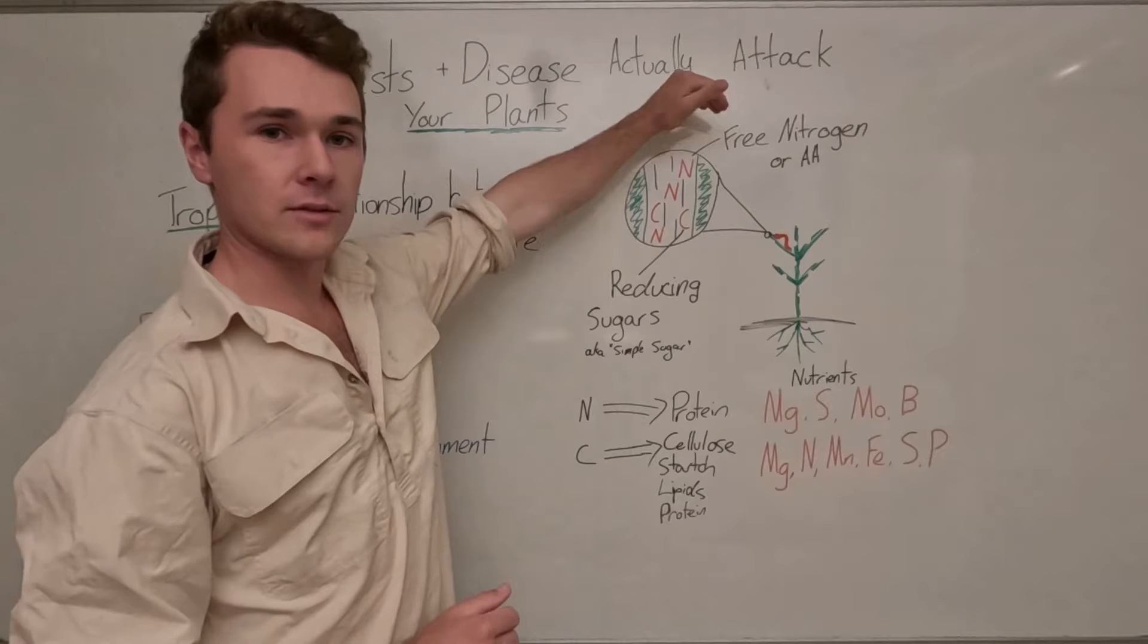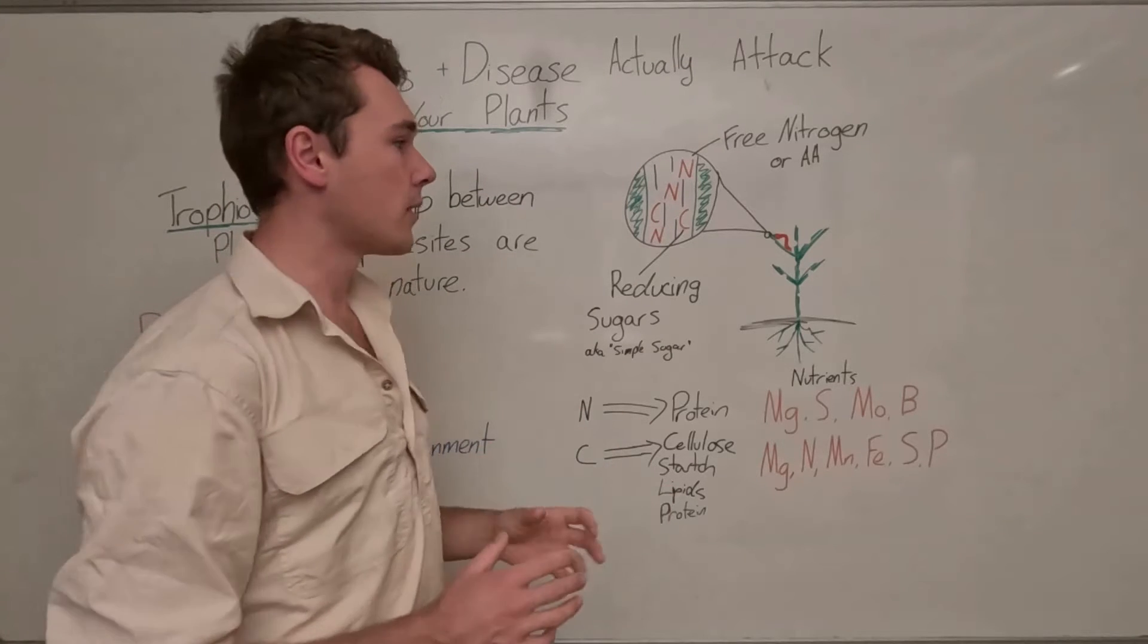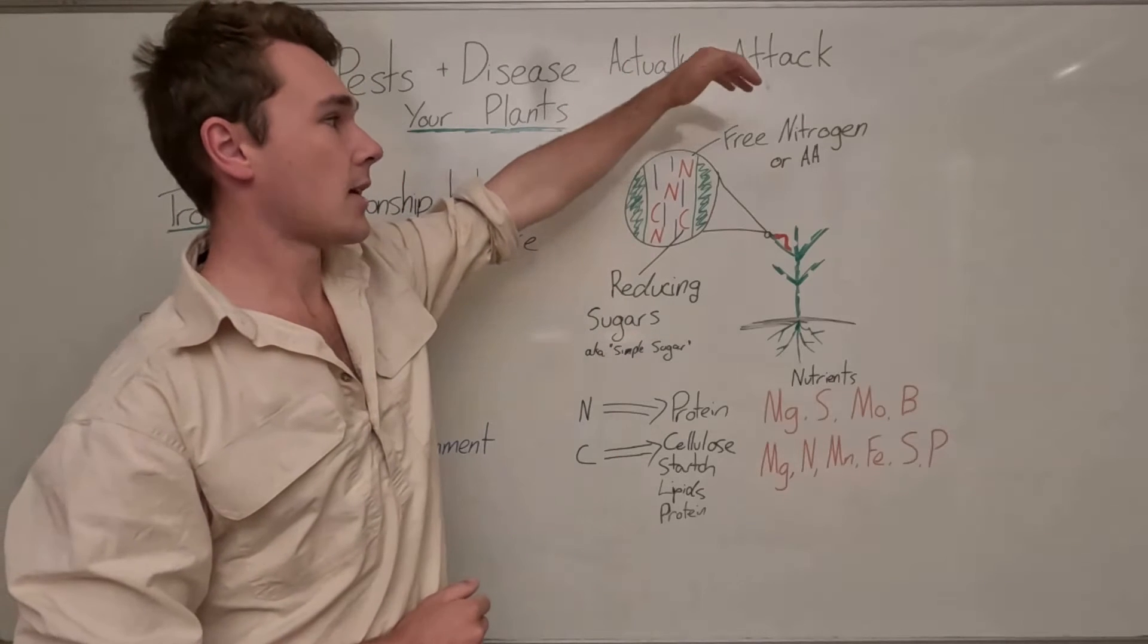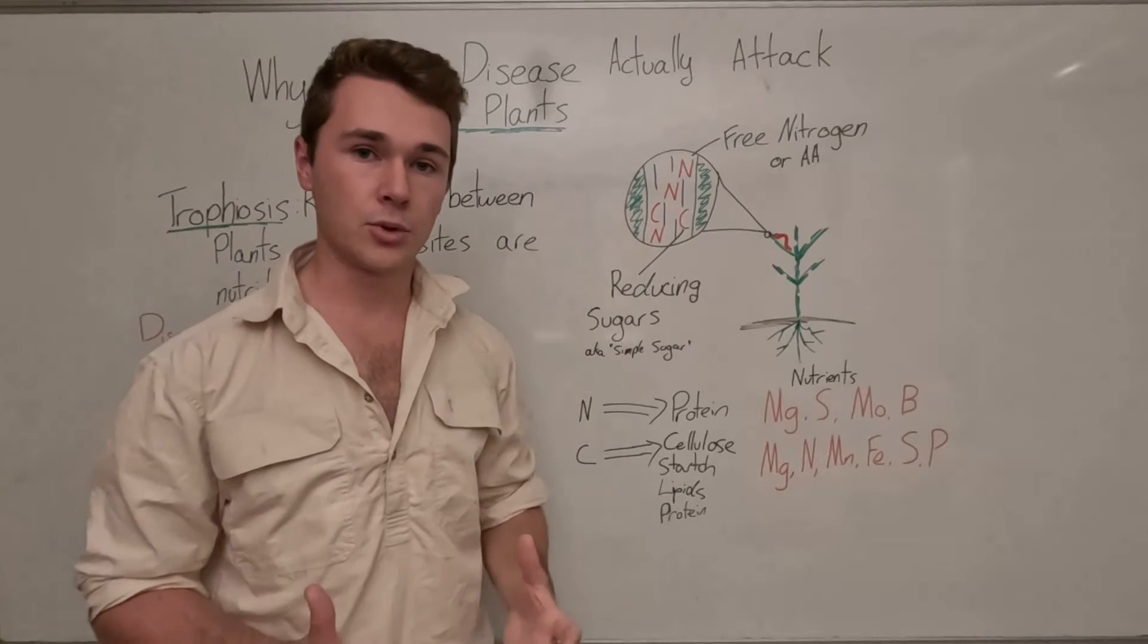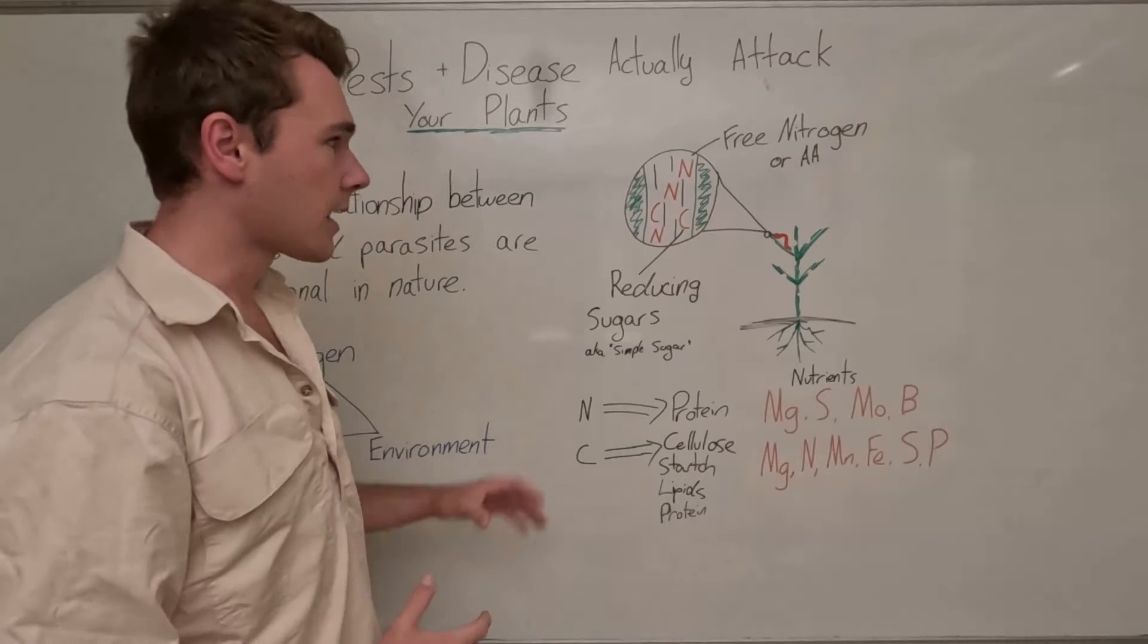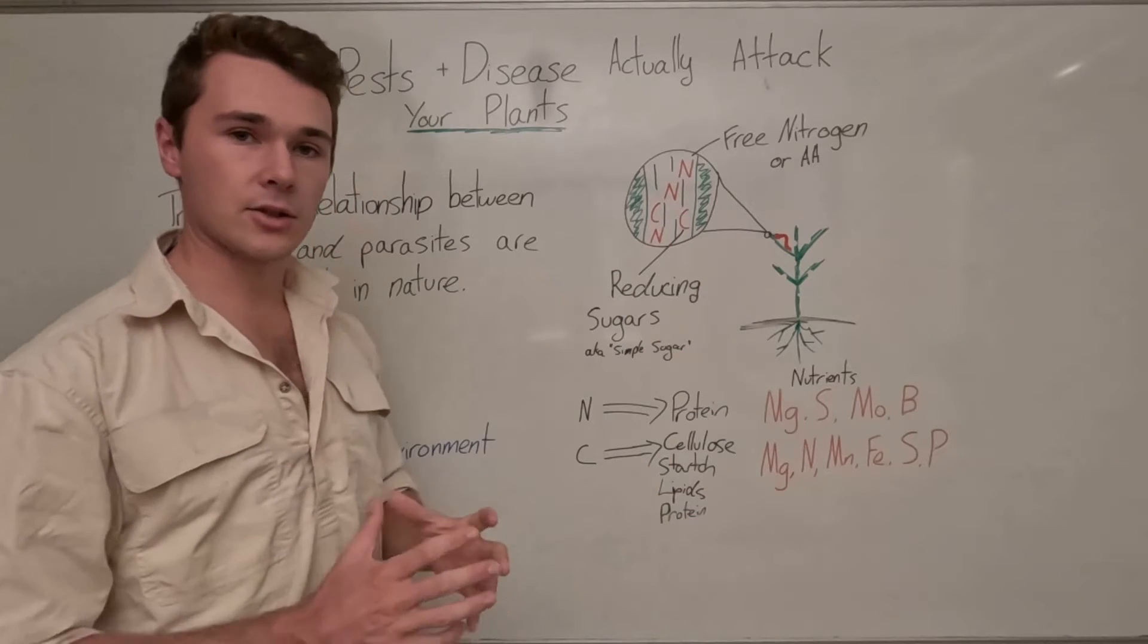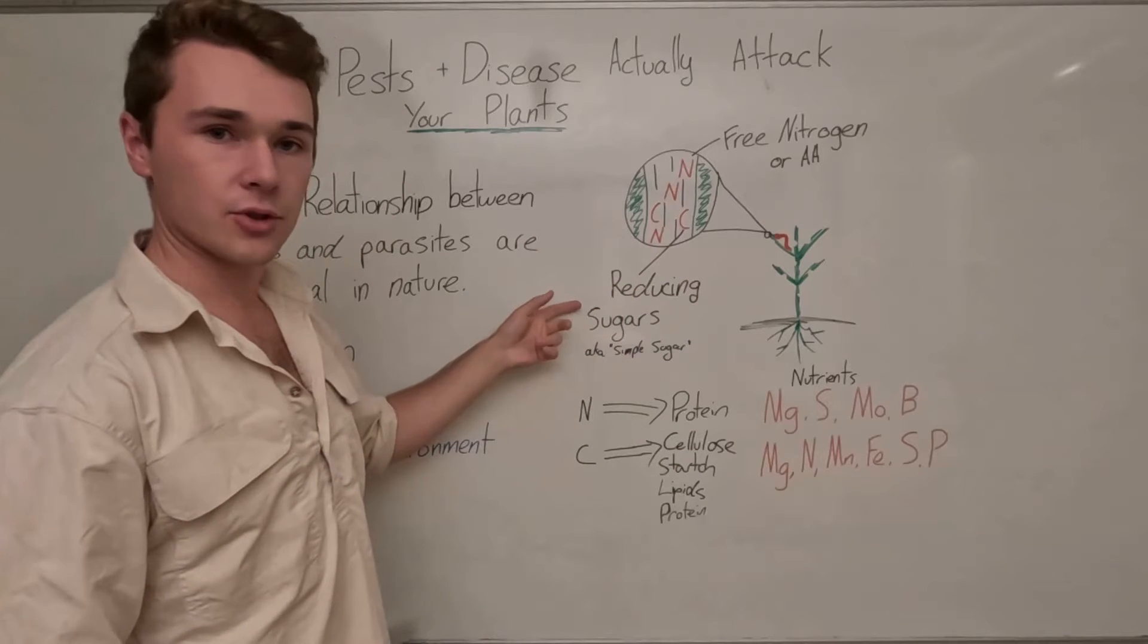So what is the thing that these pest or disease are actually trying to eat? Well, it's either free nitrogen, which is nitrogen or amino acids in the xylem and phloem of the plant. So it's not bound to anything. It's flowing easily or it's flowing in our plant. So it's either free nitrogen, which includes our amino acids, or reducing sugars, which are quite simple sugars. They include glucose or fructose as well as some other ones, but they're the main ones in plants.